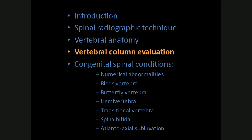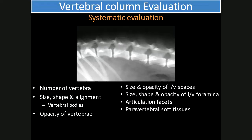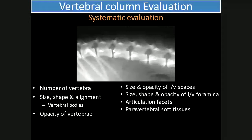Moving on to vertebral column evaluation — how to systematically evaluate a radiograph of the spine. We look at the number of vertebrae, the size, shape, and alignment of the vertebral bodies. For example, the floor of the vertebral canal should be well aligned and smooth with no sudden step formation. We also look at the opacity of vertebral bodies, the size and opacity of intervertebral spaces, the intervertebral foramina for mineralized material, the articulation facets for fractures, and always look at the paravertebral soft tissues for swelling or gas.